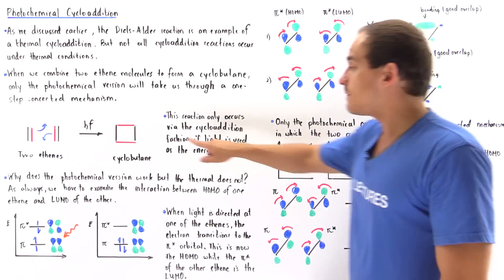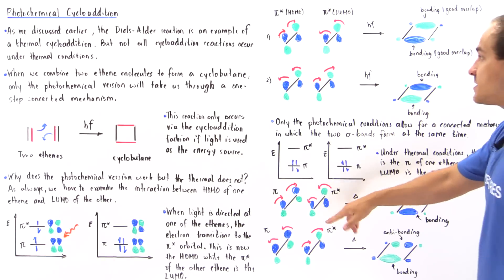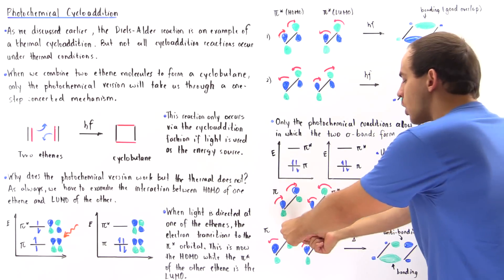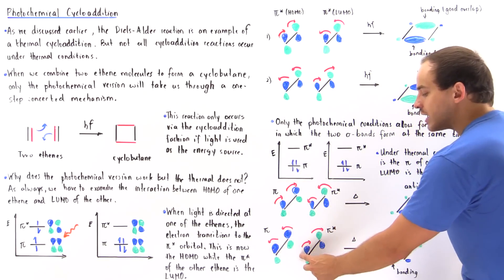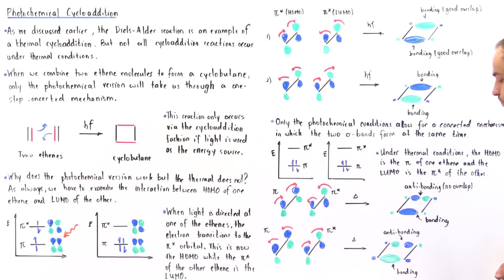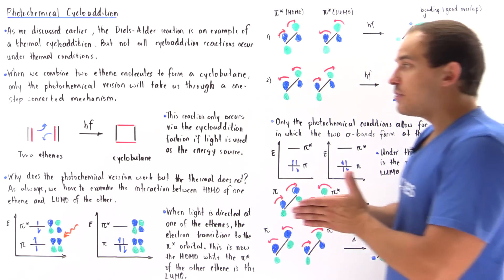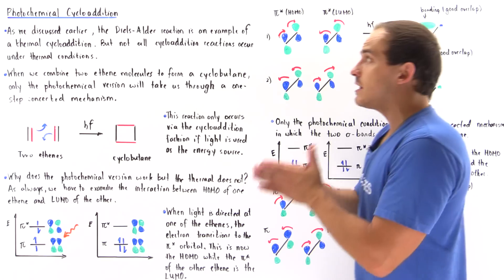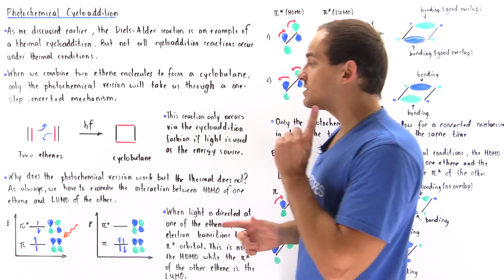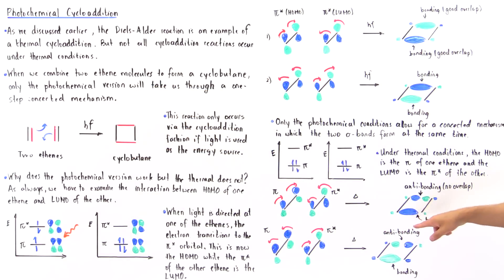That means only one of these two sigma bonds will actually form in one step. The same applies to the second type of rotation: one bond has a good green-green overlap while the other will be anti-bonding with green and blue. So under thermal conditions, this reaction does not take place via the cycloaddition in a one-step mechanism; we only form one bond and do not form the other.